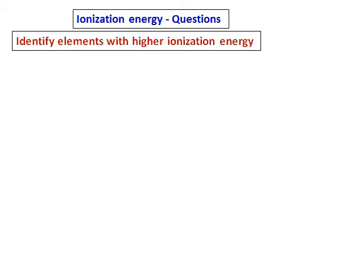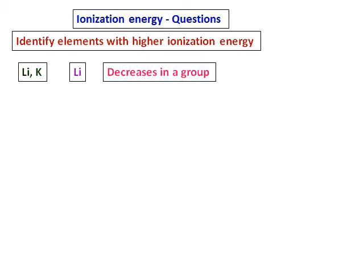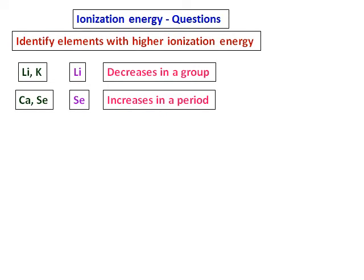Let's do some questions on ionization energy. Identify elements with higher ionization energy: lithium vs. potassium. They belong to the same group, so lithium will have higher ionization energy, as ionization energy decreases in a group. Between calcium and selenium, selenium will have higher ionization energy because they belong to the same period and ionization energy increases in a period.